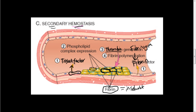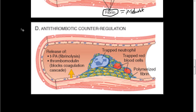After secondary hemostasis, what prevents this cascade from getting out of control and eventually occluding the whole blood vessel? These antithrombotic counter-regulation mechanisms come into play. These endothelial cells, after this platelet plug has grown, start releasing TPA and thrombomodulin. What these TPA molecules and thrombomodulin do is prevent this platelet plug from growing further and start breaking it down a little bit.